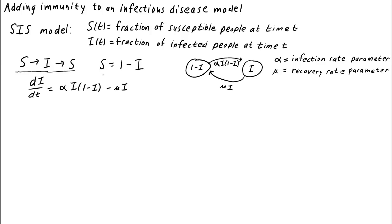Since in this model individuals were either susceptible or infected, the fractions of susceptible and infected people had to add up to 1, and so we could rewrite s as 1 minus i and not separately keep track of the number of susceptible individuals.